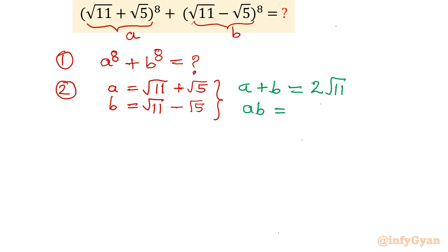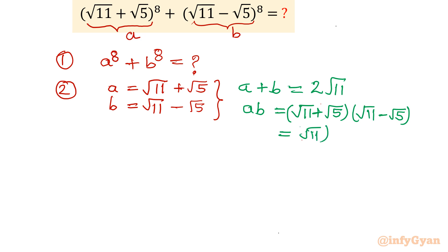Now I will take the product of a and b. Multiplying them gives (√11 + √5)(√11 − √5), which is the difference of two squares: (√11)² − (√5)² = 11 − 5 = 6. So ab = 6.